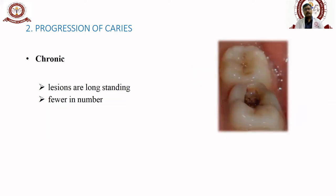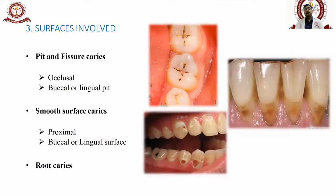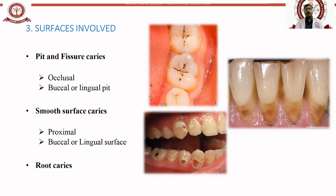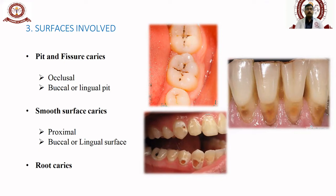Regarding the preparation period, caries is mainly chronic — long-standing — and can be treated with restorations. If it is nearer to the dentin or pulpal region, various treatments such as root canal treatment or pulp capping may be required. The first surface usually involved is pits and fissures, where buccal or lingual pits are commonly seen. Pit and fissure caries are the most common type, while smooth surface caries is seen on proximal buccal or lingual surfaces.